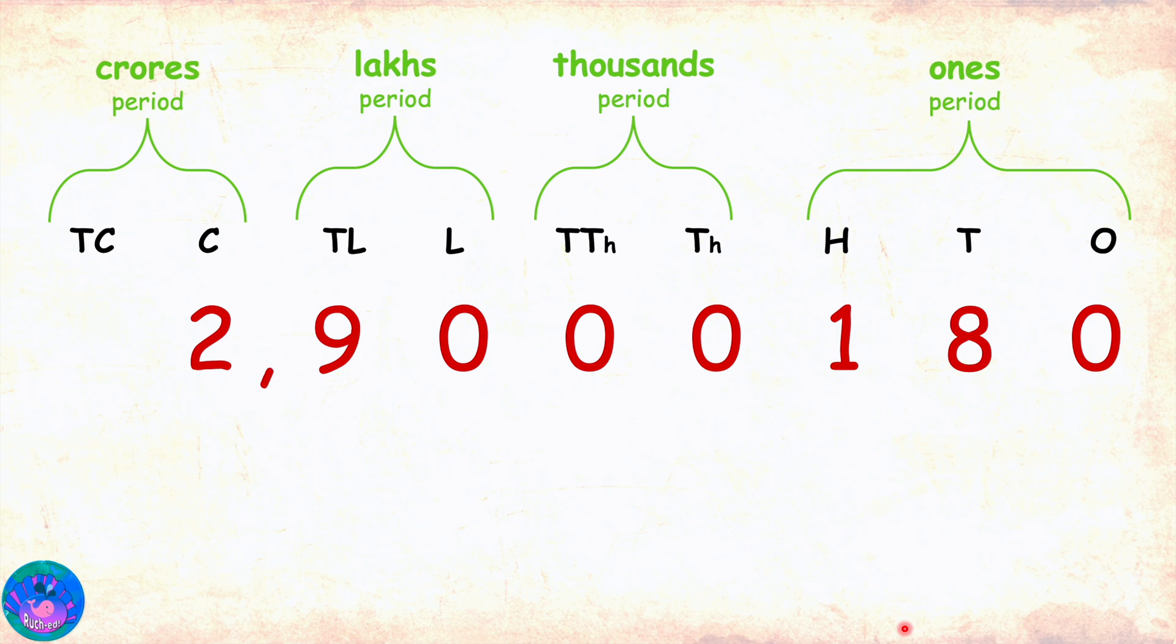Now, we insert the comma between the periods and start reading the number. Miss R, I can see that the thousands period only has zeros. So, should we omit reading it? Definitely! Okay, so the number is two crore ninety lakh one hundred and eighty. Excellent!